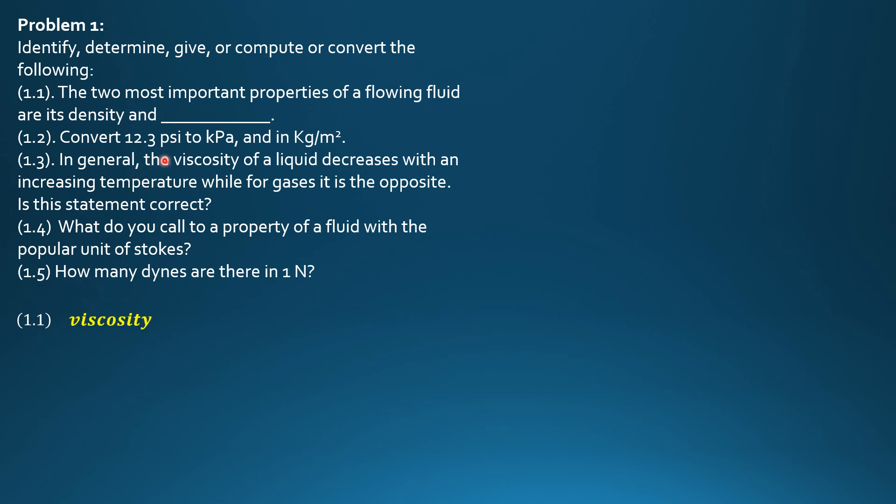Convert 12.3 psi to kilopascals and in kilogram per square meter. So 12.3 psi, let's use the conversion 101.3 kilopascals, which is equivalent to 14.7 psi. You have to look for this in the second lecture video on pressure because standard atmospheric pressure is 101.325, but you can use 101.3 and it is equivalent to 14.7 psi. So 12.3 psi is 84.76 kilopascals.